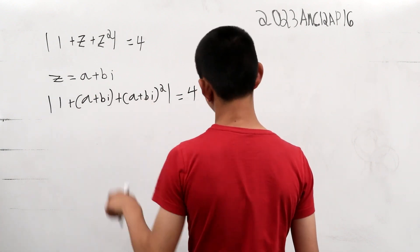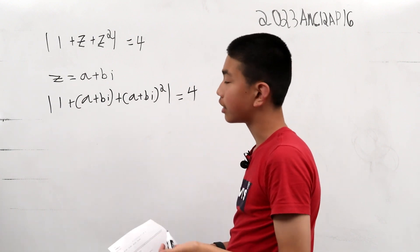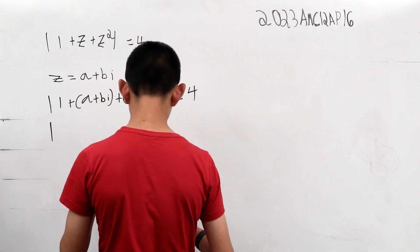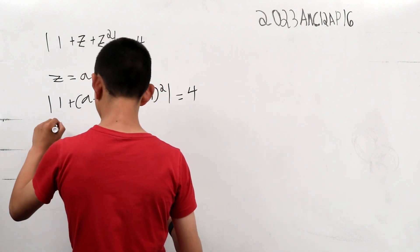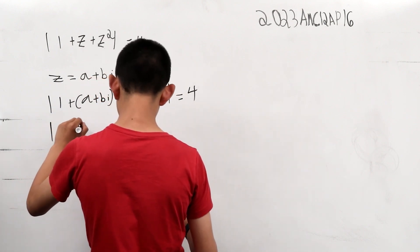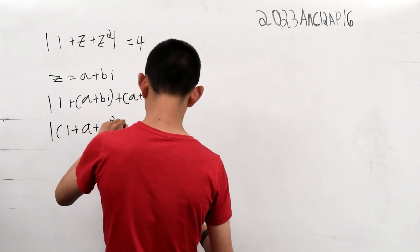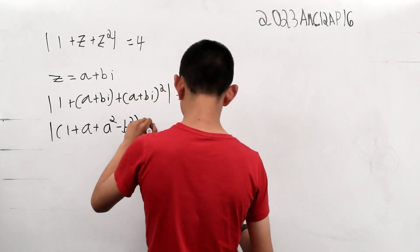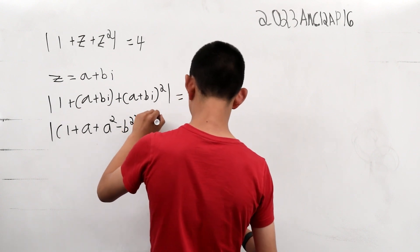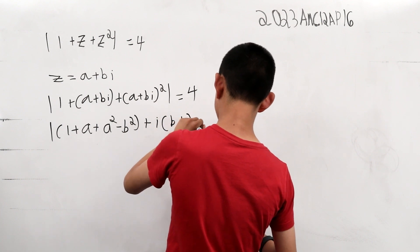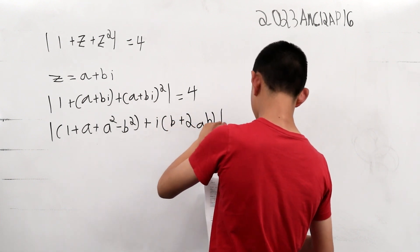and then factoring it in a way that makes us easy to compute the answer to this problem. So this is going to be the absolute value of one plus a plus a squared minus b squared. And then this is going to be plus i times b plus 2ab is four.